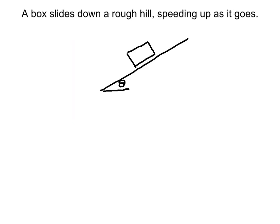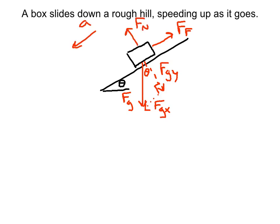Let's do a box sliding down a rough hill, and it's speeding up as it goes down the hill. So our forces here, we have the force of gravity going straight down, and we have to do FGY and FGX. Remember that this angle here is theta, the same theta as the hill. The force of friction is going to go back up the hill. The normal force is perpendicular to the hill, and our acceleration is pointing down the hill.